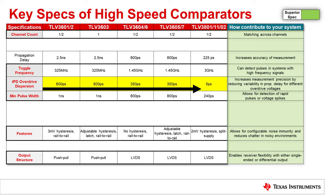On the left, our slowest TLV3601 has 2 nanoseconds prop delay and 600 picoseconds dispersion, while all the way on the right, our TLV3801 has 200 picoseconds prop delay and 5 picoseconds dispersion. You may also notice that the slower response devices are push-pull output while the faster devices are LVDS — we'll talk about that further towards the end.